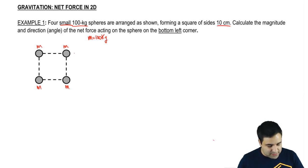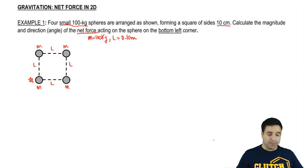It's a square, so all these sides have a length of L everywhere. And L equals 0.10 meters. And I want to calculate the magnitude and direction of the net force acting on the sphere on the bottom left corner. So I want to know what is the net force here.